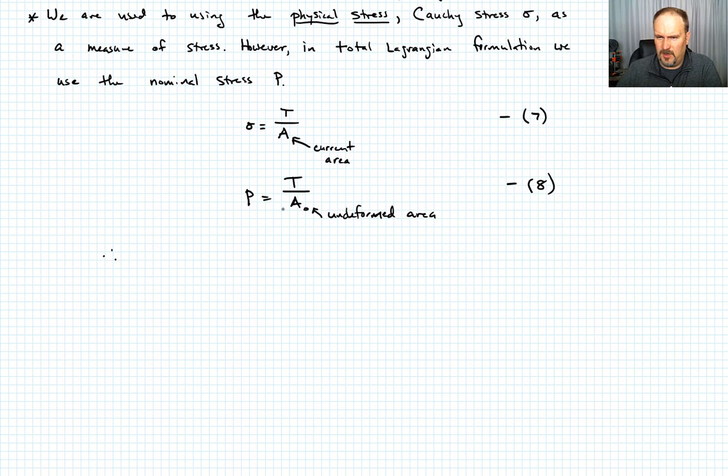So we can write that there's a relationship, in this case, between the nominal stress, P, and the Cauchy stress, σ. We could say that σ is equal to A₀ over A times P. Or we could go the other way and say that P is equal to A over A₀ times σ. Call that equation 9.